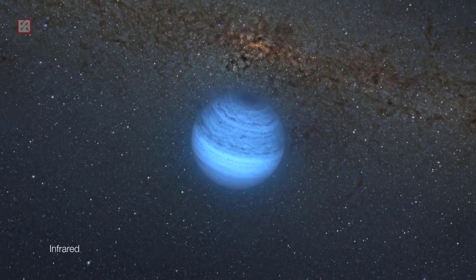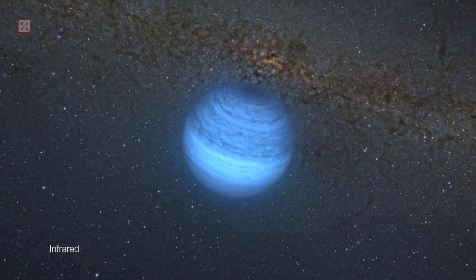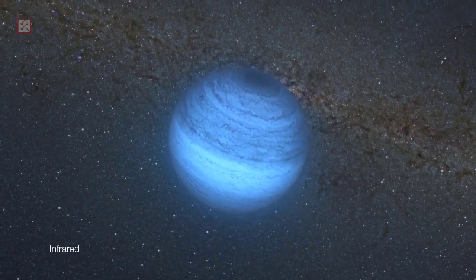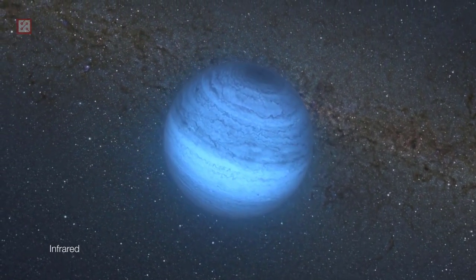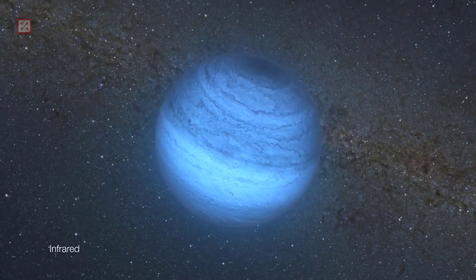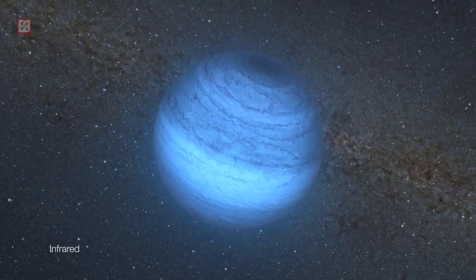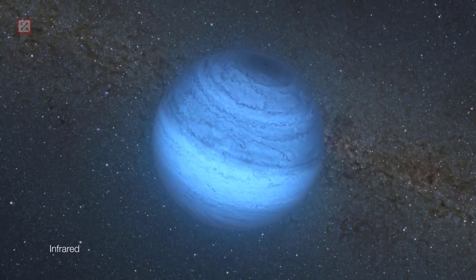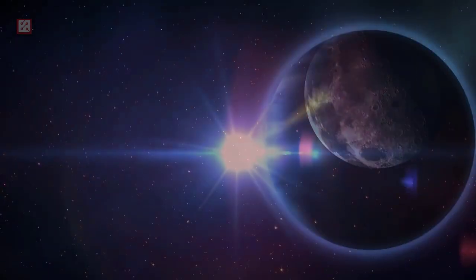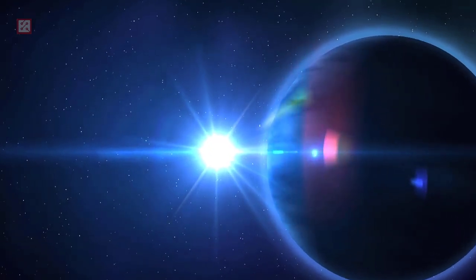Ross-128b, an Earth-size exoplanet, was discovered in 2017 by measuring changes in radial velocity of the host star. It's known as the second-closest exoplanet, after planet Proxima b. As calculated, planet Ross-128b has a minimum mass of 1.35 times the Earth and orbits 20 times closer to its star than Earth orbits the Sun, intercepting only about 1.38 times more solar radiation than Earth.